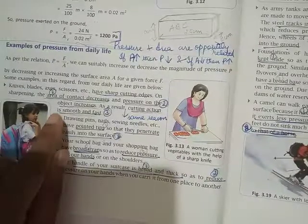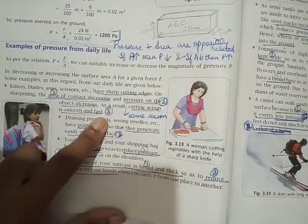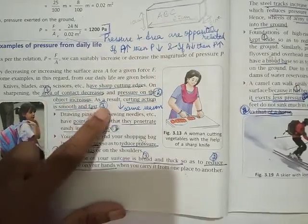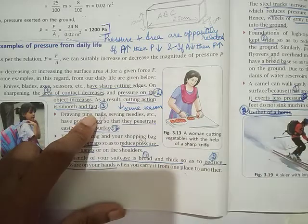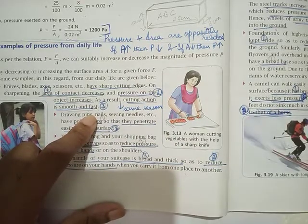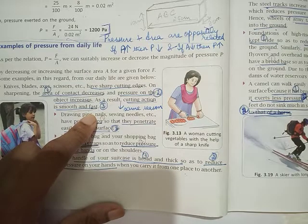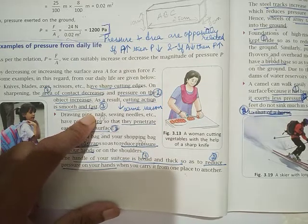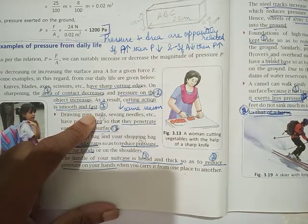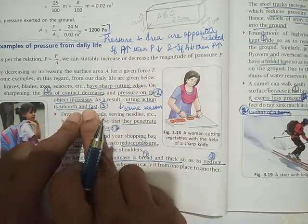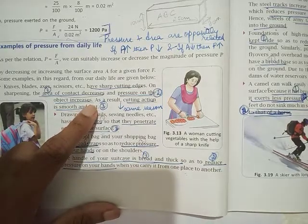Now always I have been telling you, especially when you study these applications, it will have two points. One is about area more or area less based on that pressure. Second, what is the effect of it? What happens because of that? You have to say that also. Cutting is easier. It can walk easily. Otherwise marks will not be given.